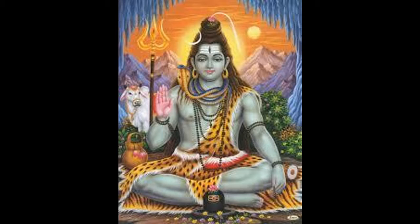Paka means food, Pachati means to cook. So these Yajnayas are done with cooked food and are called Paka Yajnayas. The next 7 are called Havir Yajnayas - Havis means cooked rice, so these are done with cooked rice. The last 7 Yajnayas are called Soma Yajnayas, done with Soma. There is a mythical plant called the Soma herb; juice is made from it called Soma Rasa, and Yajnayas done with Soma Rasa are called Soma Yajnayas.